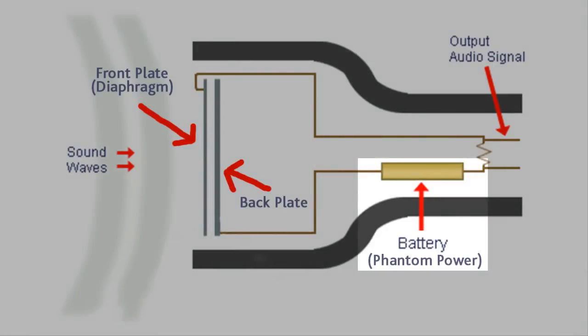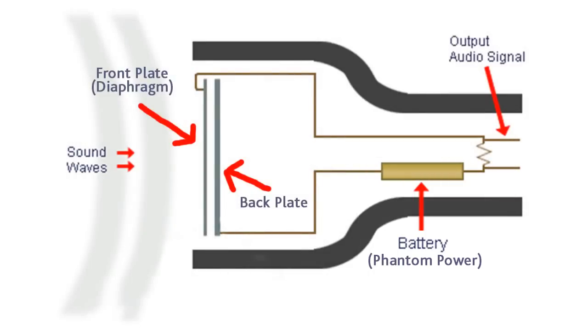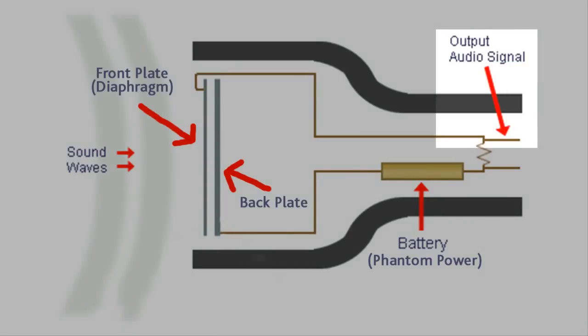An electrical source provides current, which will pass through the plates and create an electrical field between the plates. This electrical source used to be a battery, but today it is much more common for condenser microphones to use phantom power. As the diaphragm vibrates, the electrical field changes, which results in your audio signal.